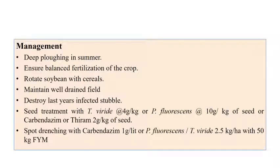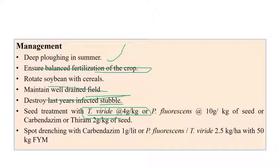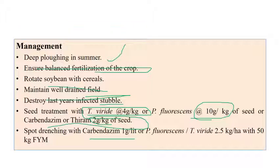Coming to the management aspects: deep ploughing in summer and balanced fertilizer application are recommended. Rotate soybean with cereals, maintain well-drained fields, and destroy infected stubbles every year. Seed treatment with Trichoderma viride at 4 grams per kilogram or Pseudomonas fluorescens at 10 grams per kilogram of seeds is recommended. Chemical treatment with carbendazim plus thiram at 2 grams per kilogram, and soil drenching with carbendazim at 1 gram per litre, or biocontrol agents at 2.5 kg per hectare along with 50 kg of farm yard manure, can be applied.